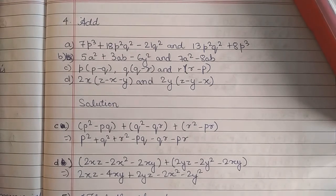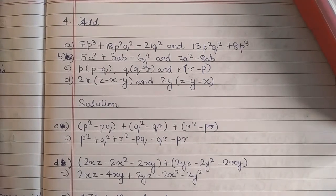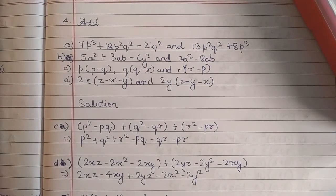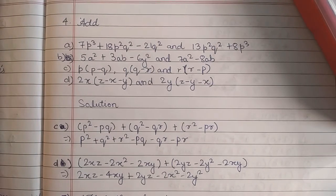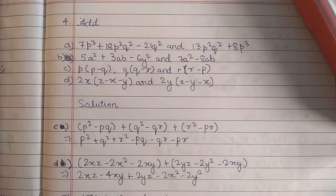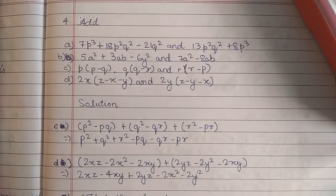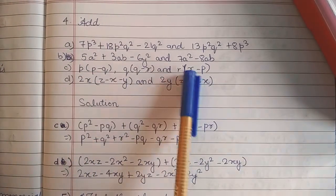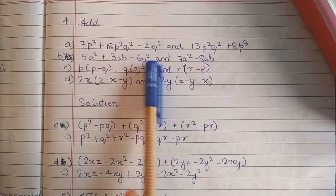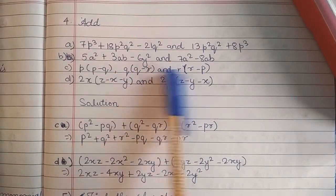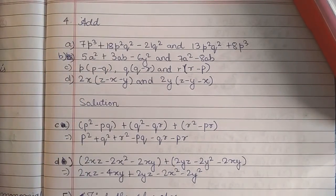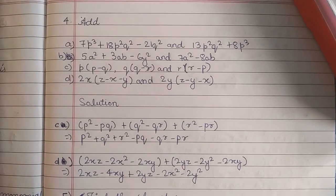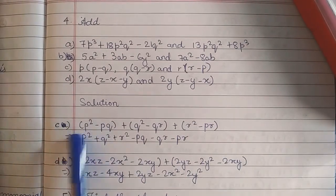So let's come to the fourth question. Fourth is add. Here in a and b you will solve by yourself and comment the answer in the comment box. And c and d I will show you here. c is p(p - q), q(q - r) and r(r - p). Here we have to add these three. So here first we have to solve this, then we will plus and then we will solve this and we will also plus this also. So p(p - q) + q(q - r) + r(r - p).